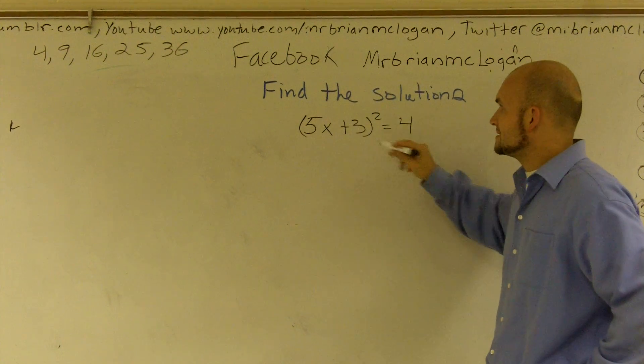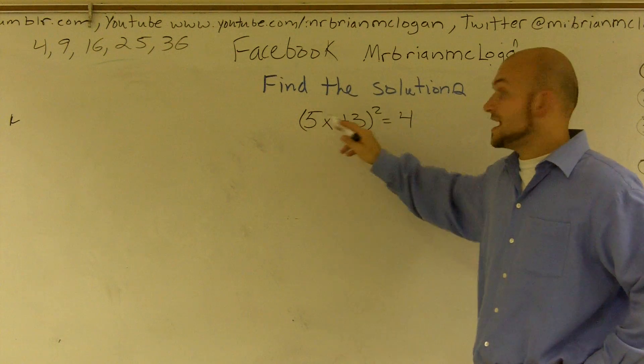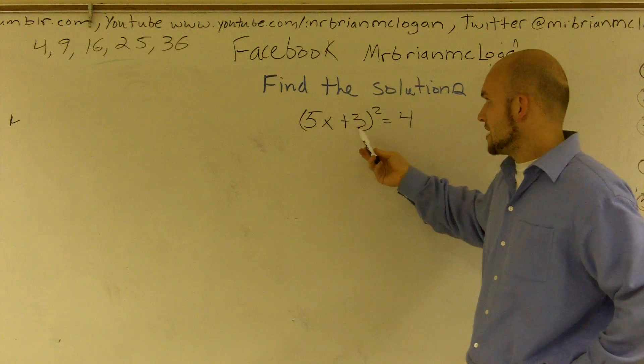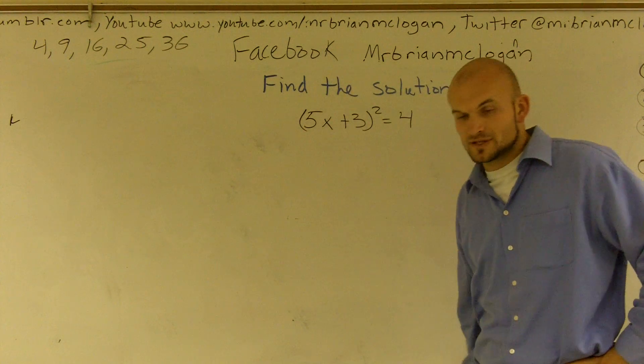So what I see here is I see that this x is being multiplied by 5 and it's being added to by 3. So I need to undo my addition and undo my multiplication.